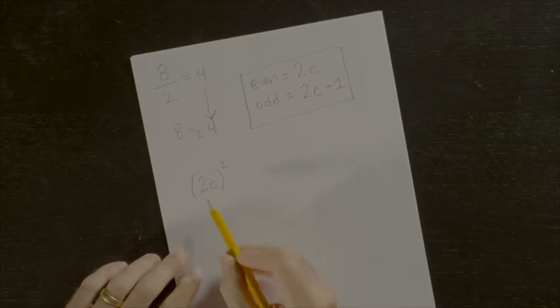Now, 2c squared equals... let's look at the equation 2 equals a squared over b squared.